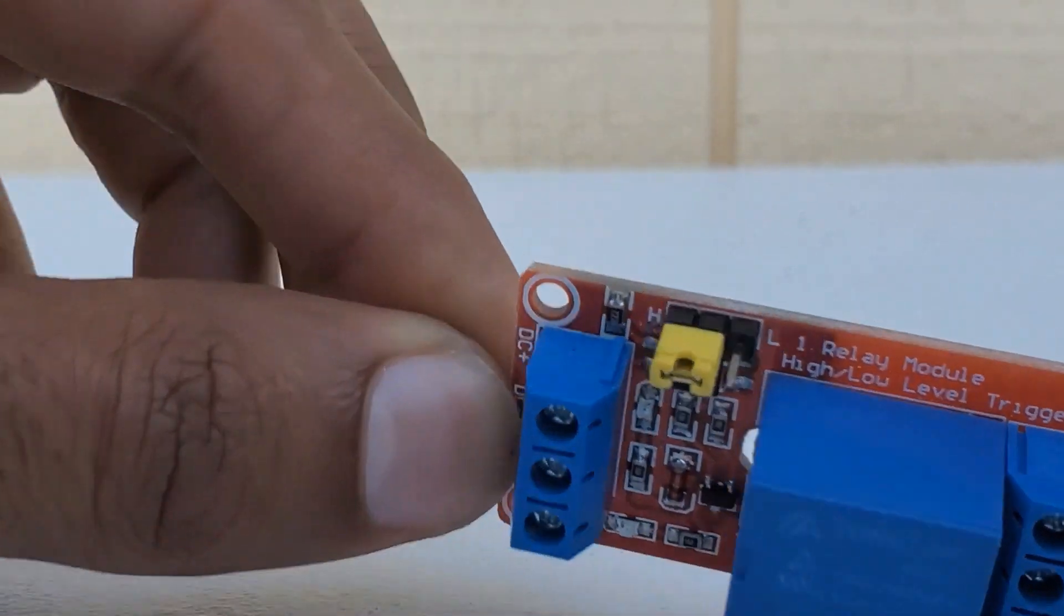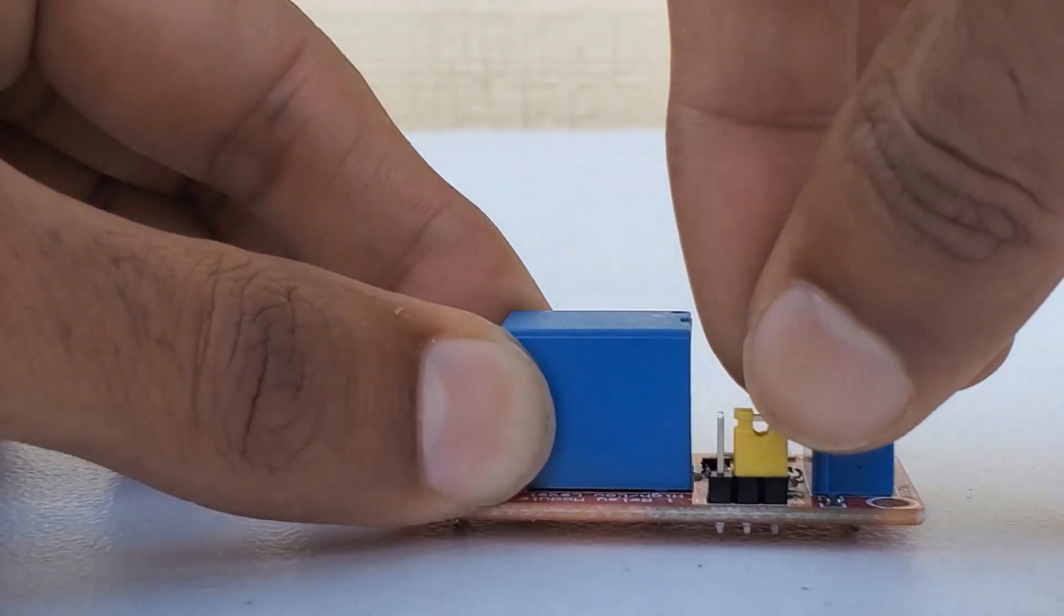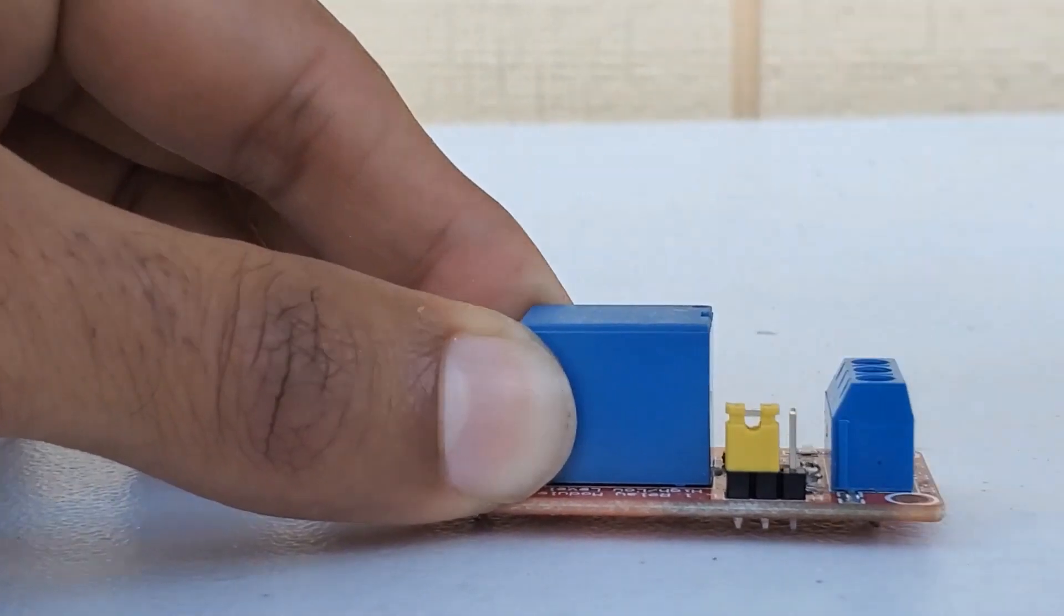The infrared sensor we're using for this project has an input that's inverse, so we need to make sure our relay module is in the low voltage trigger feature. To do this, we just need to move the jumper to the low voltage trigger side.